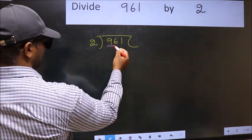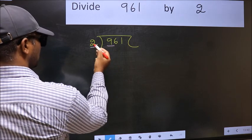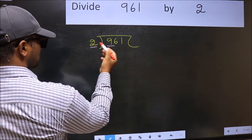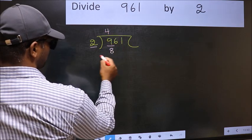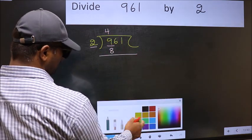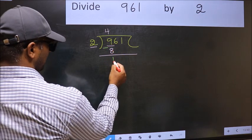Here we have 9 and 2 here. A number close to 9 in 2 table is 2 fours, 8. Now you should subtract. 9 minus 8, 1.